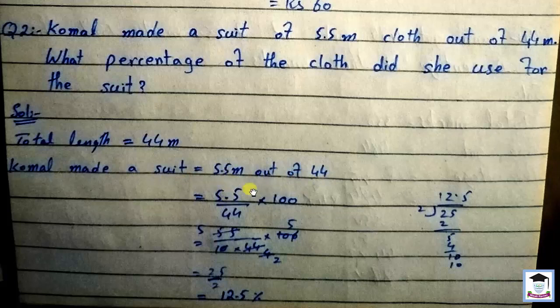Out of means divide, so 5.5 over 44 multiply by 100. Remove the decimal point: 55 over 44 times 100. This gives us 55 times 100 divided by 44. 2 times 25 equals 50, divided by 2 gives 12.5 percent.